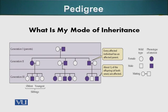We have already talked about these pedigree symbols. When you look at this pedigree, you can immediately tell it is an autosomal dominant condition. We will go into the features of autosomal dominant disorders next. Also please note: when making a pedigree, the oldest offspring comes first, then the second oldest, then the third, and the youngest is last. Now let's look at autosomal dominant disorders, then autosomal recessive, and then X-linked disorders.